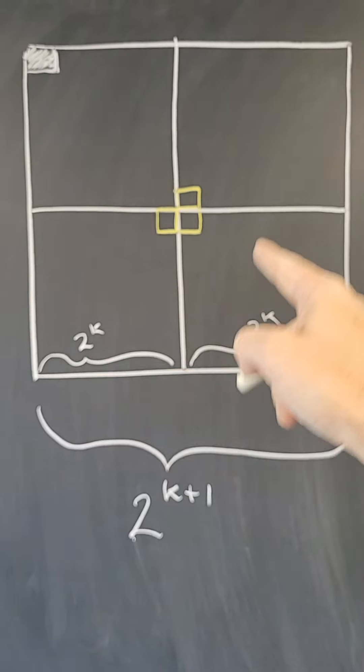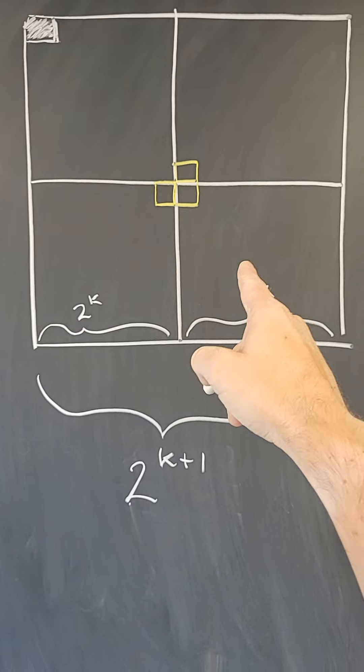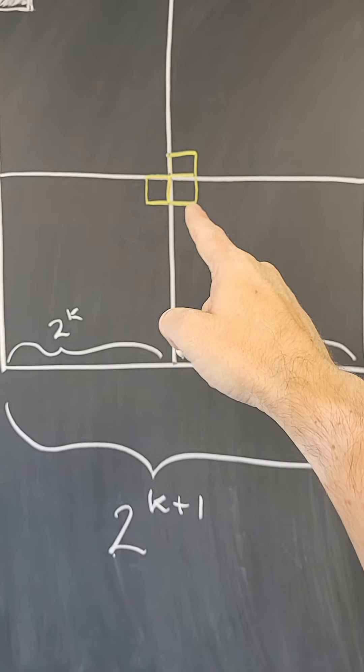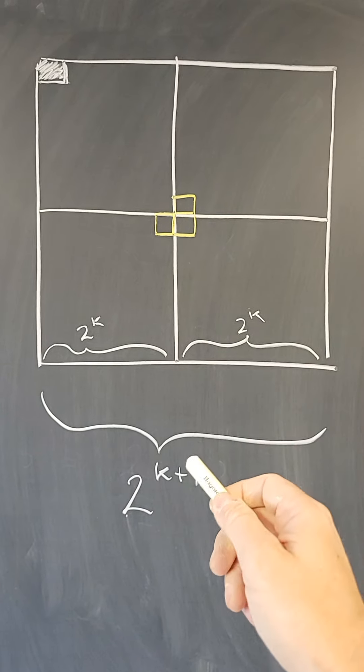So I can tile them all by the induction hypothesis. And since I can tile that one, that one, that one, and that one using pieces of this shape, I can tile the entire thing using pieces of that shape.